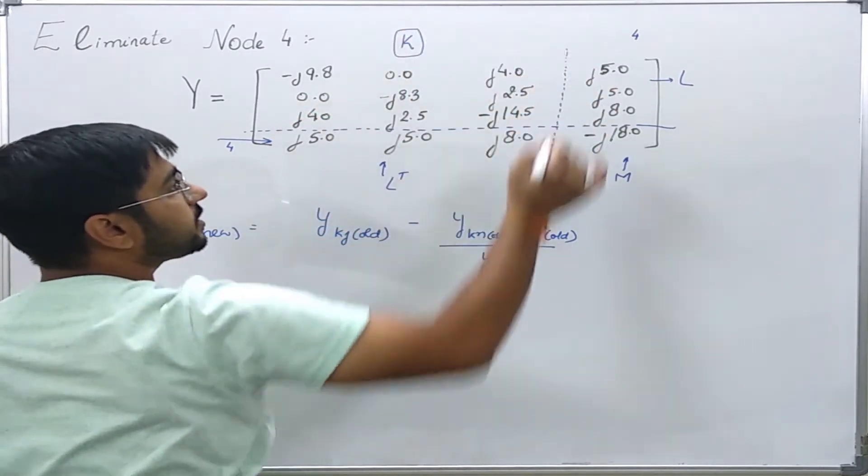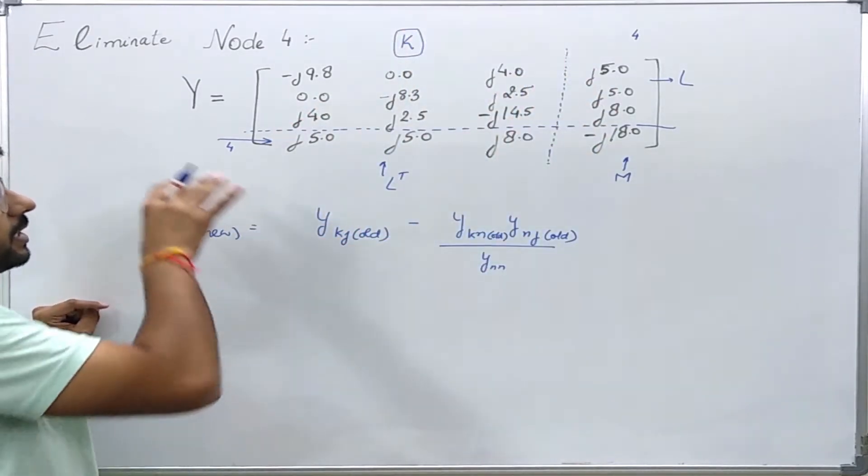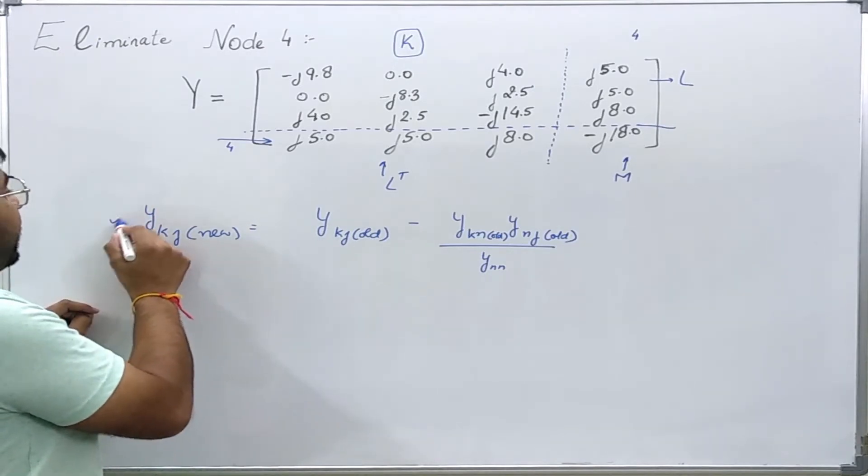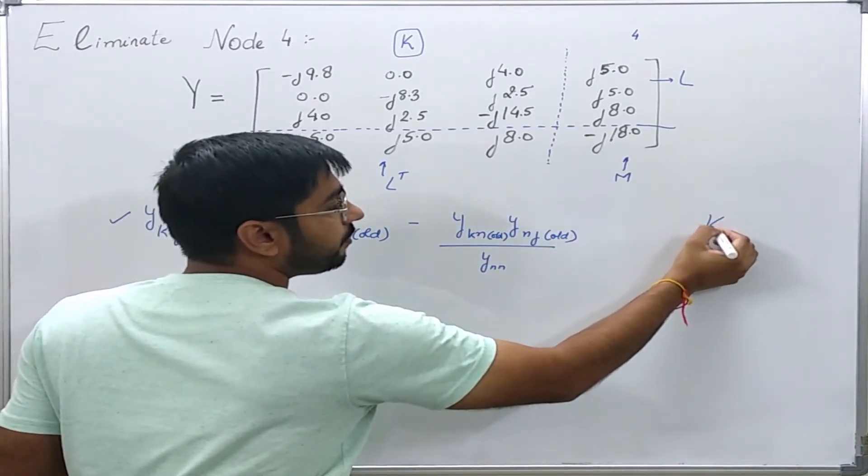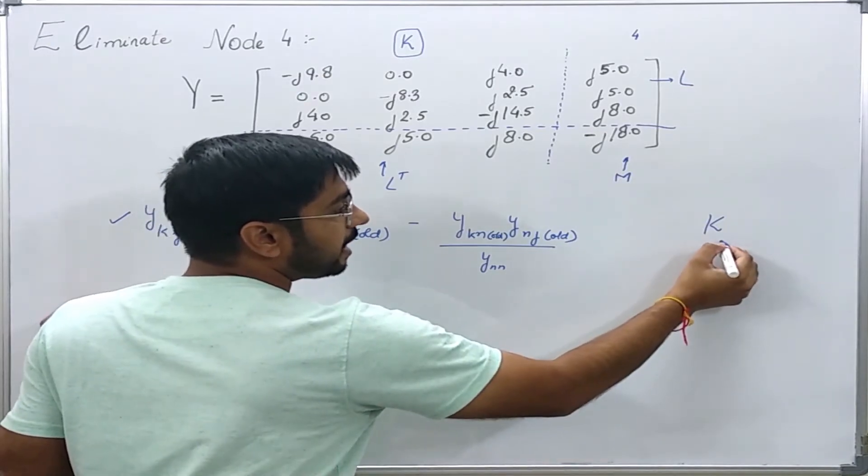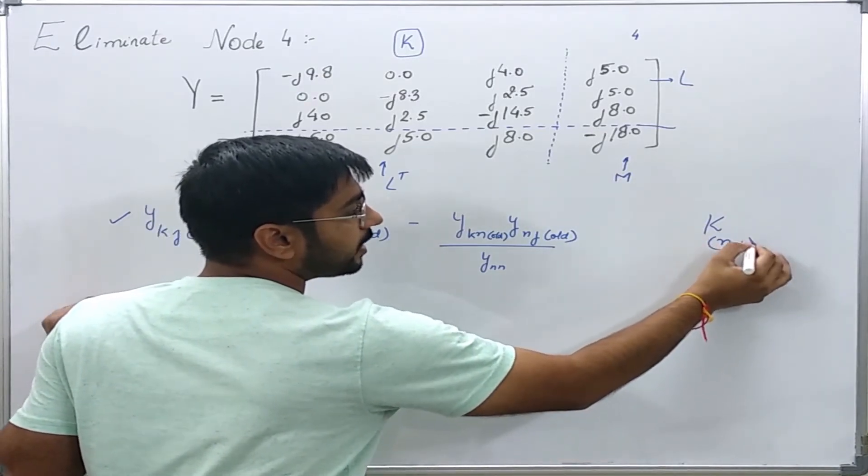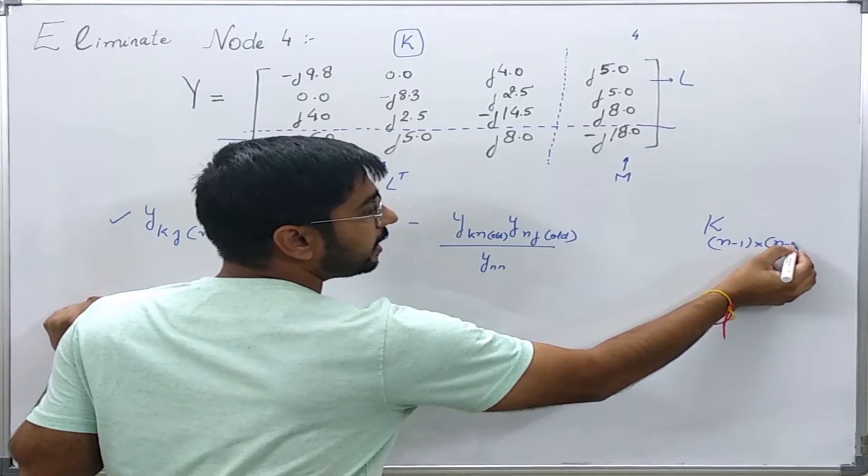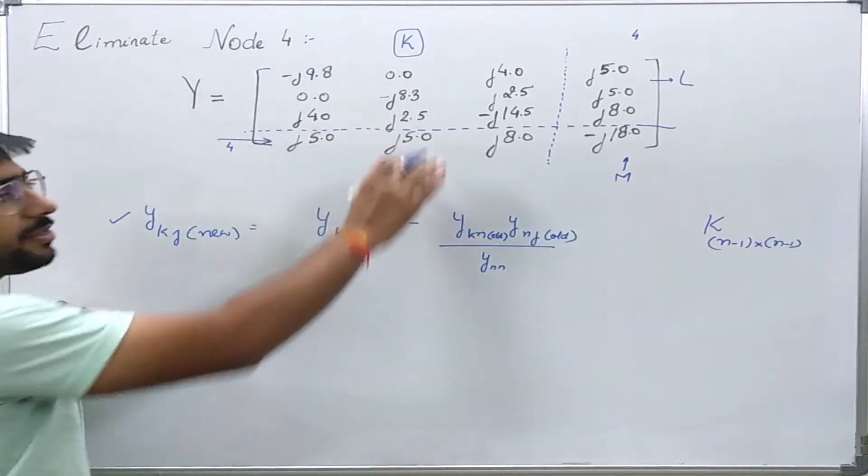This is the old K matrix, and once I use this formula repeatedly then I will get a matrix K with new elements and it will be of order N minus 1 by N minus 1. Here in this case it will be of 3 by 3 order matrix.